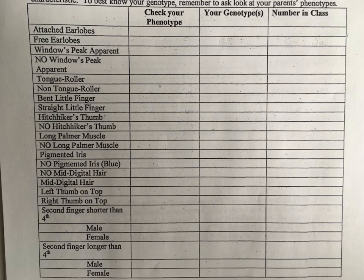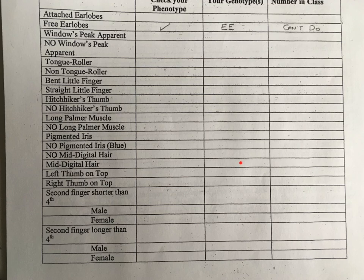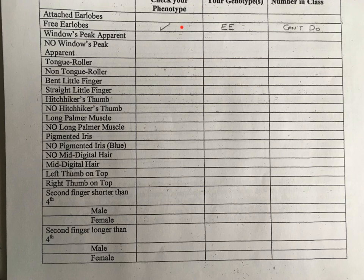Go to page 9 where it says to put a check where your phenotype is. I have free earlobes, so I put a check for free, meaning I have at least one uppercase E. However, both my parents have free earlobes as well, so I am big E and big E. As for counting the number of students in the class, we can't do that right now since you're not physically there. You're going to go through the rest of this video, checking your phenotypes and writing in your genotypes. We're not going to worry about the last column, just fill in the first two as we go.